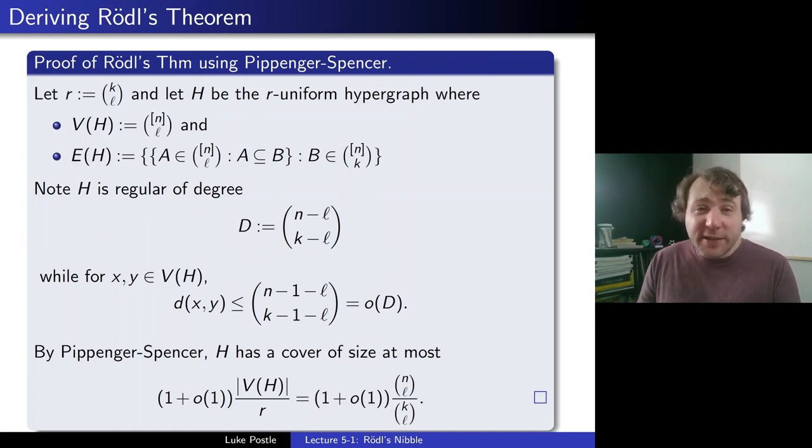And thus, we can apply the Pippenger-Spencer theorem to find a cover as small as we want. So of size at most (1+o(1))|V(H)|/r. And what is that number? Well, if you do it, r is k choose ℓ, and V(H) is n choose ℓ. So we get (1+o(1))(n choose ℓ)/(k choose ℓ). And that proves the Erdős-Hanani conjecture, i.e. Rödel's theorem. So that's the way to derive it. So that makes clear that Pippenger-Spencer is just a more general version.